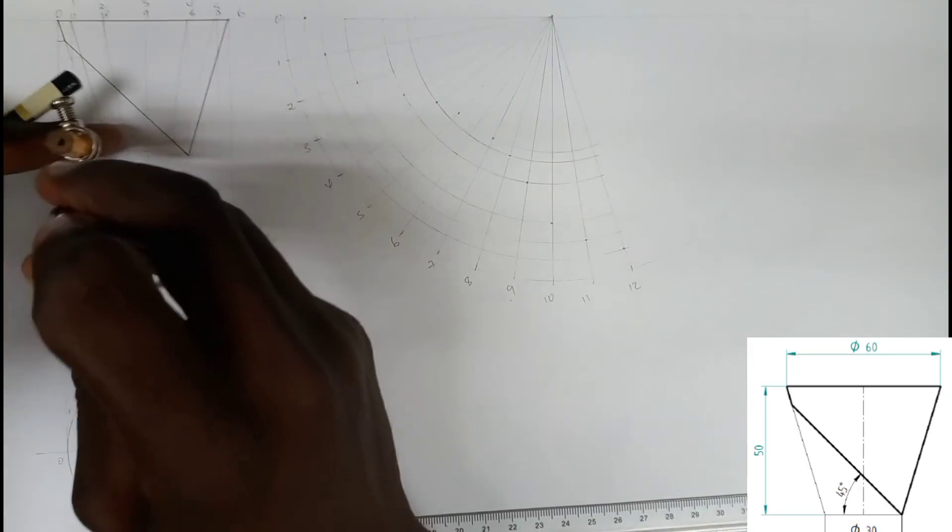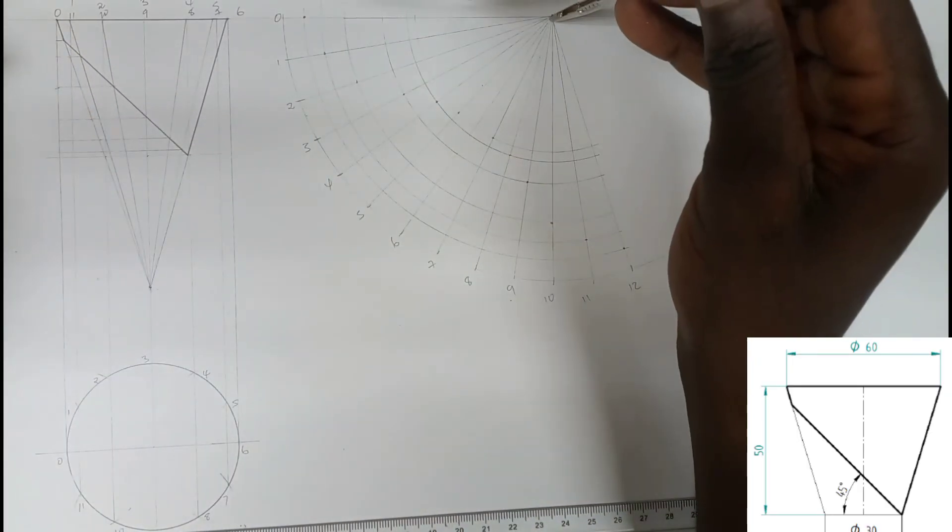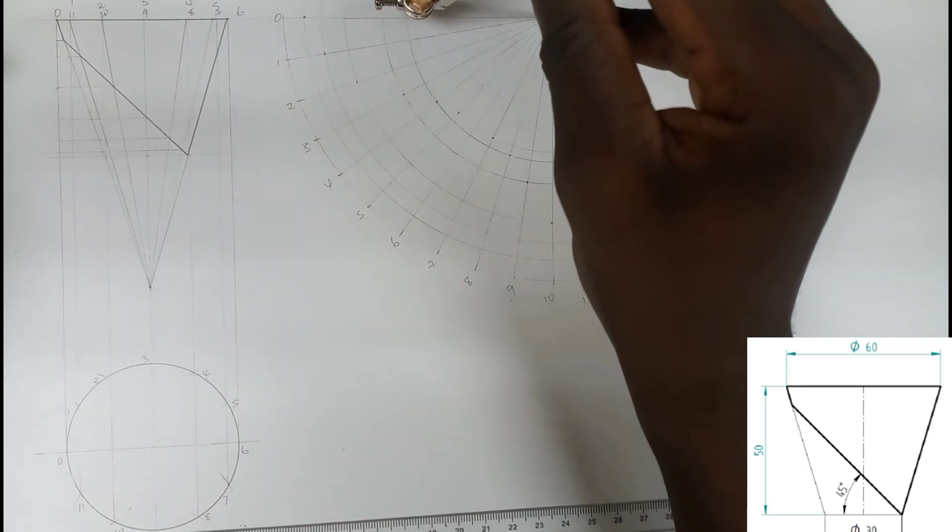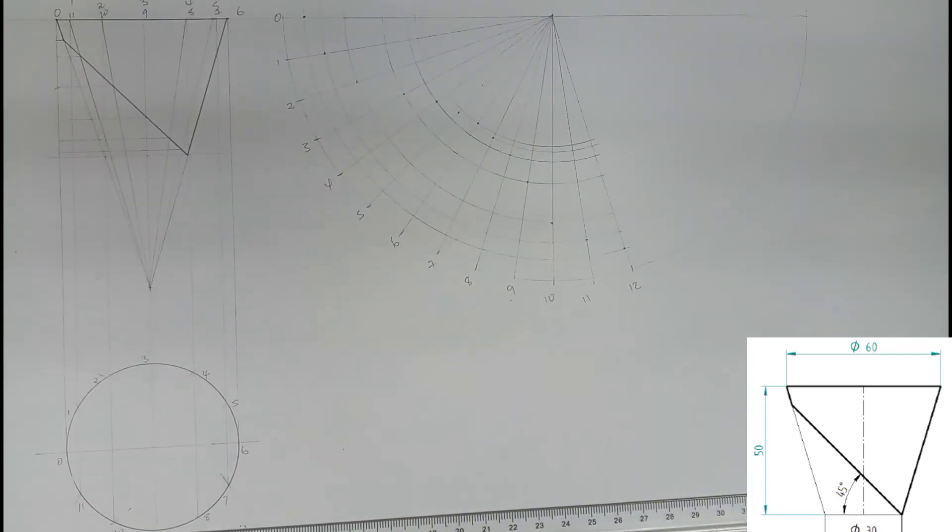Finally, point 6. This is point 6, and it's here. The only thing left to do is to outline this with a smooth line.